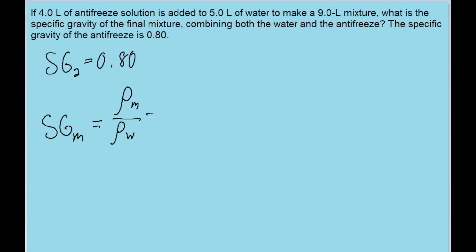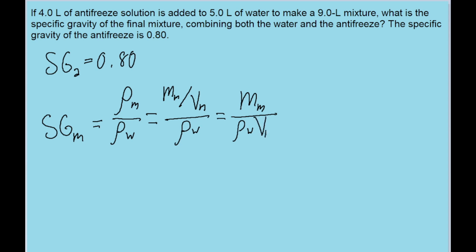We don't have the density of the mixture — that's one of the things we'll need to first find. But density is equal to mass over volume, so you can also write this as being equal to the mass of the mixture, m sub m, divided by the volume of the mixture, v sub m, over the density of water. To make this look a little neater, I'm going to bring this down into the denominator — so the mass of the mixture divided by the density of water times the volume of the mixture.